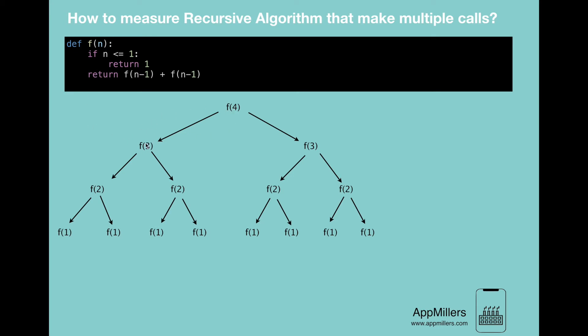In this tree, each node has two children. f(4) has two children of f(3), and each f(3) has two children of f(2), and each f(2) has two children of f(1).